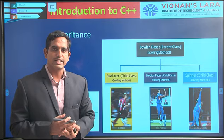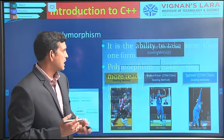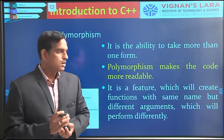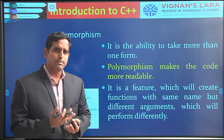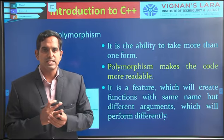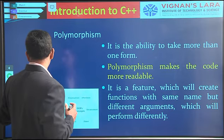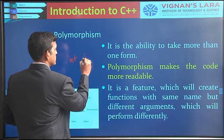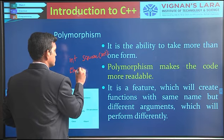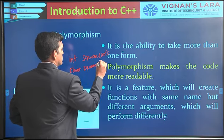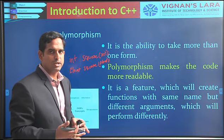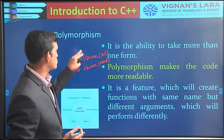Inheritance provides reusability in object oriented programming. We also briefly started about polymorphism — the ability to take more than one form. Polymorphism makes the code more readable and helps us create multiple functions with the same name but with different arguments. For example, you can have an int square of int and a float square of float — different functions having the same name, which we call function overloading.